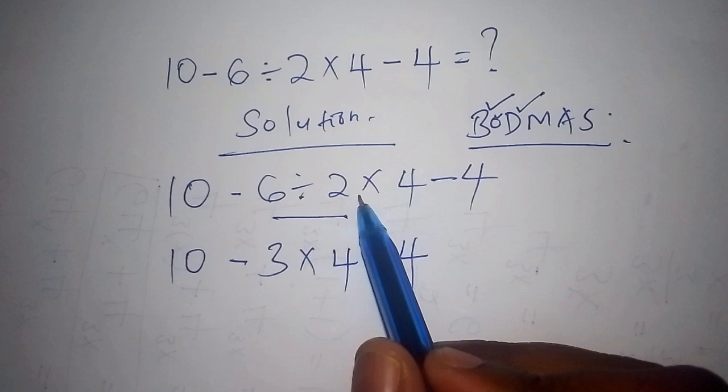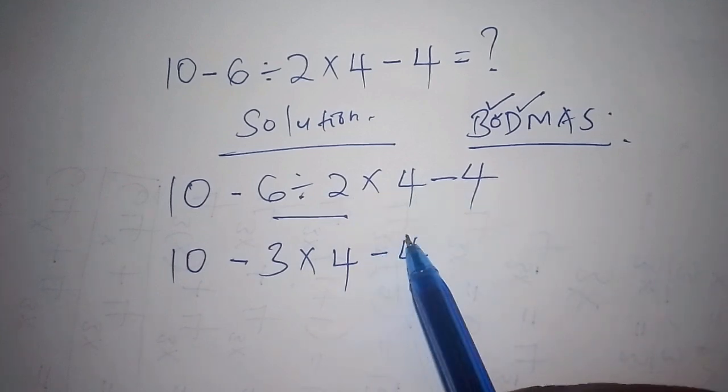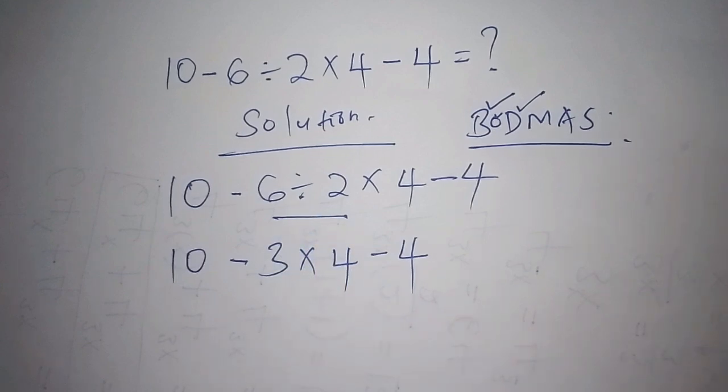Otherwise, if you work out 2 multiplied by 4, it will give you 8. And then now from there, you now take it, you divide by 6, you end up with the wrong answer.